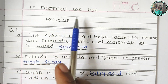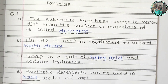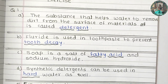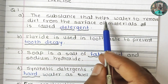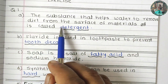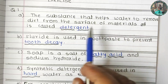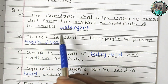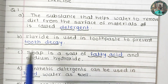Materials We Use. Let's solve one exercise. This is the first question: The substances that help water to remove dirt from the surface of materials is called dash dash. The answer is detergent.